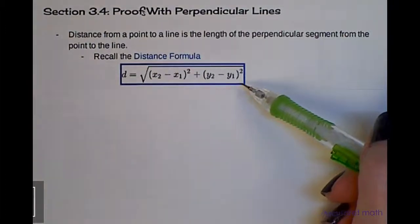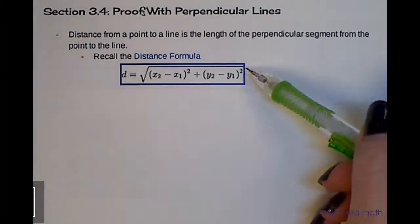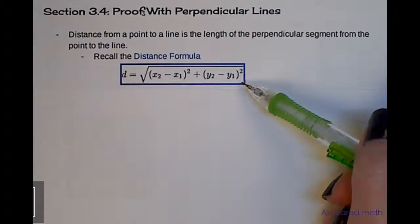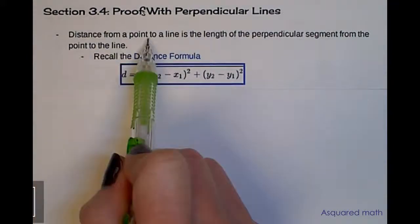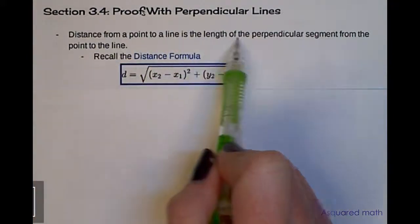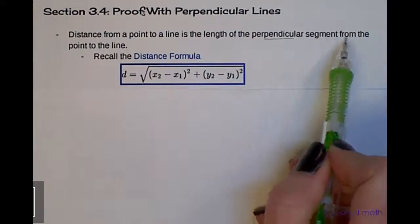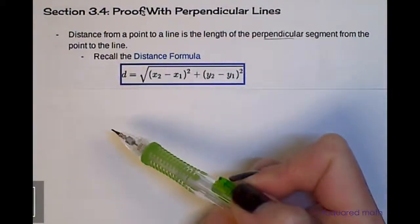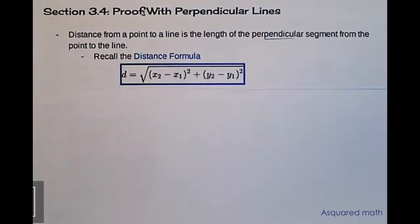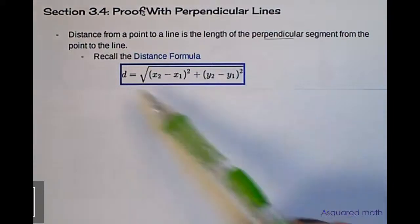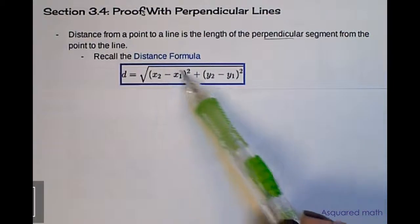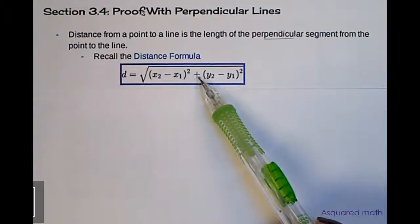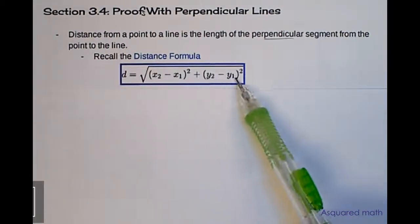You may or may not have been introduced to this, but this will find the distance — the length of the line from one point to another. An important thing to realize is the distance from a point to a line is the length of the perpendicular segment from the point to the line. We're going to do an example to calculate the length of that perpendicular segment using this distance formula, which is the square root of the change in your x-coordinates squared plus the change in your y-coordinates squared.